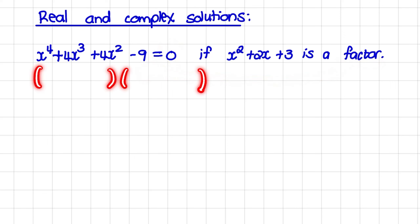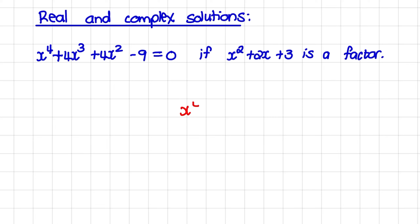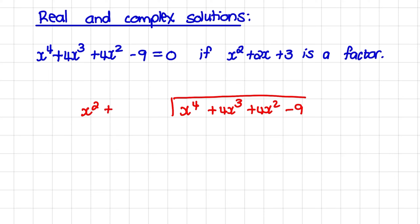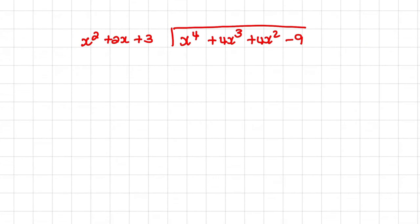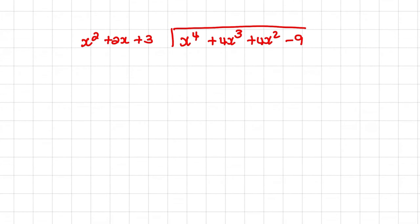So our first set of brackets would be x squared plus 2x plus 3, and we want to figure out the second set of brackets. We will use long division to do that. So we have x to the power of 4 plus 4x cubed plus 4x squared minus 9, and we are going to divide that expression by the factor of x squared plus 2x plus 3. When we do long division, we take our first term and divide it by our first term in our factor.